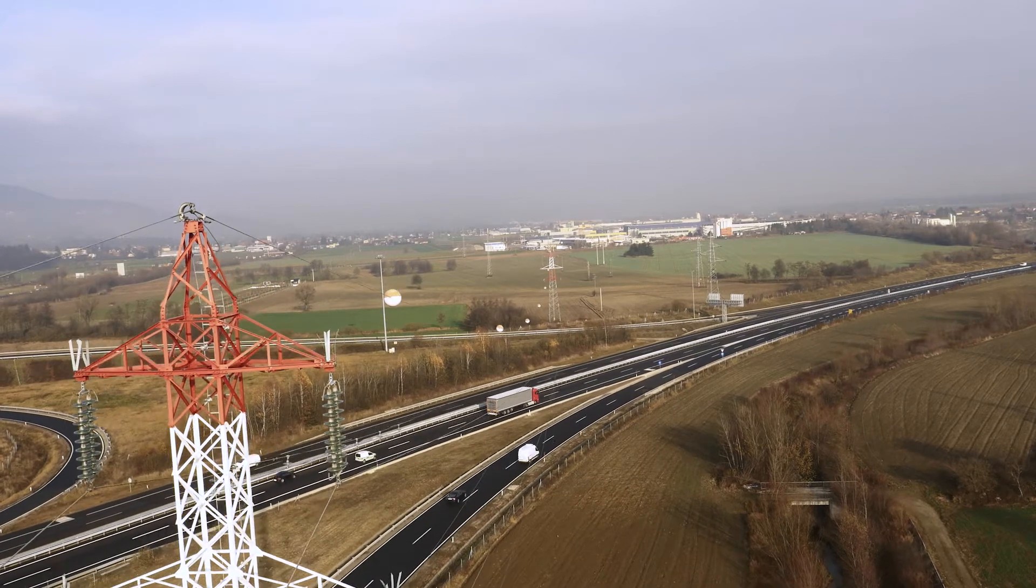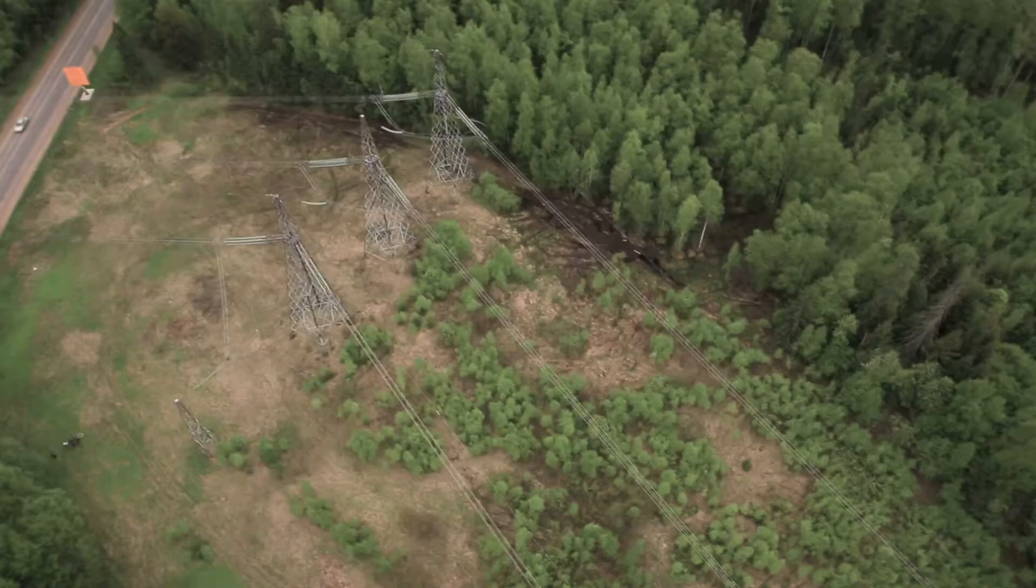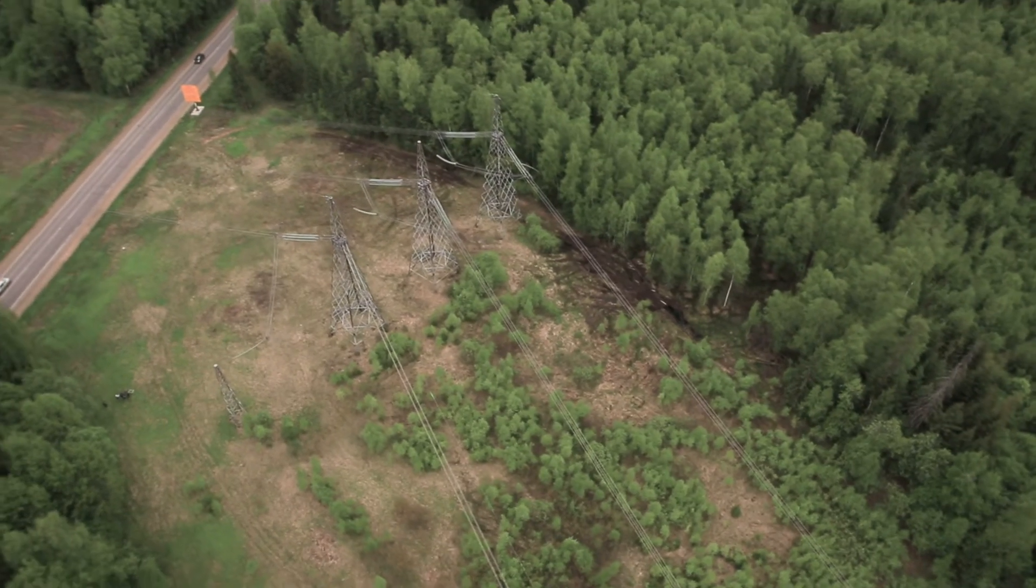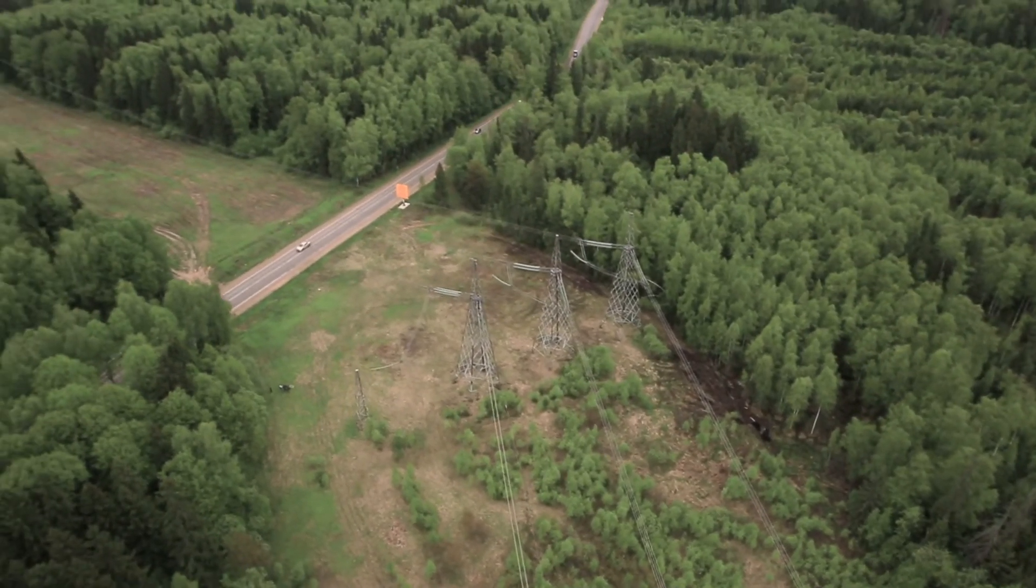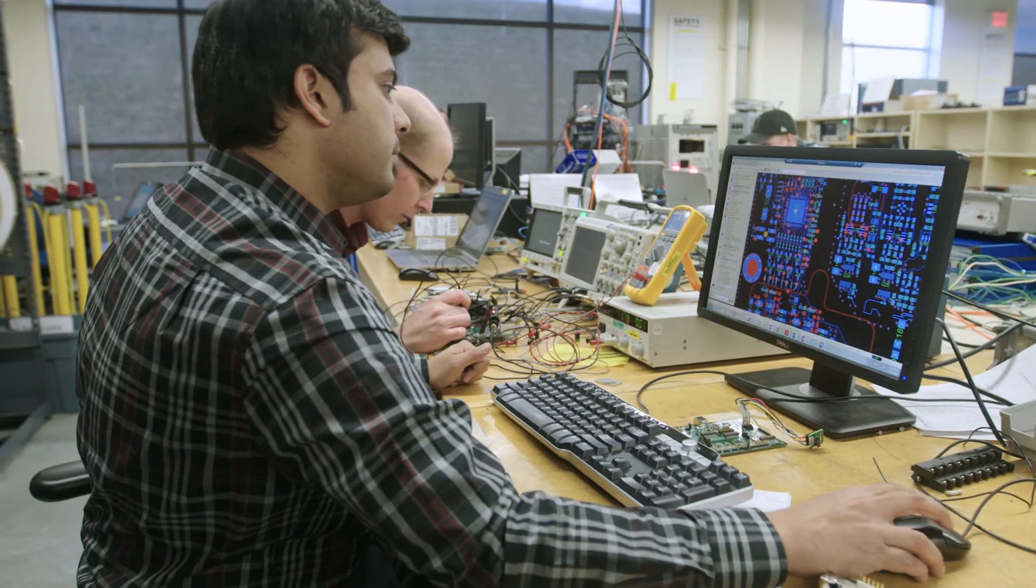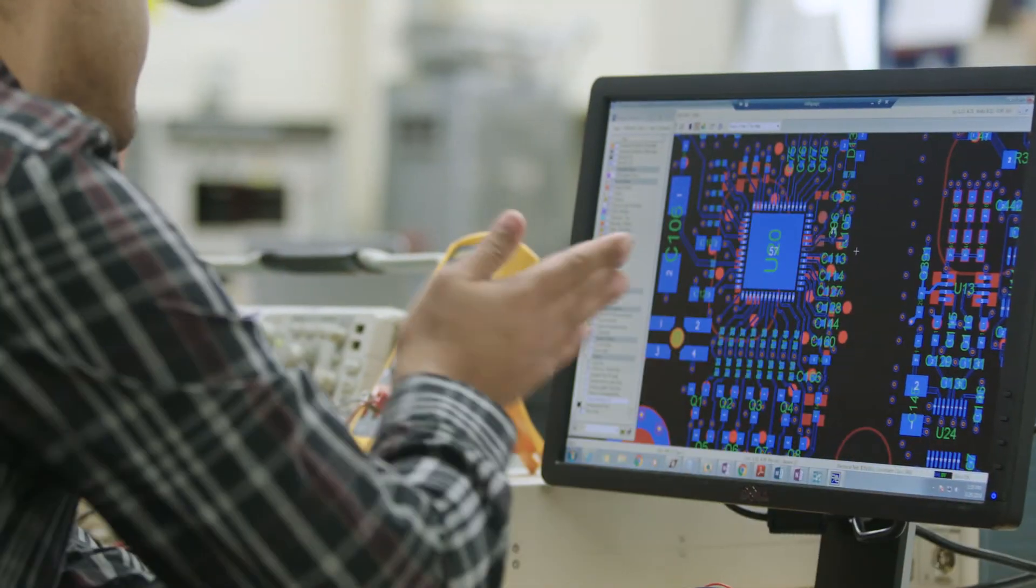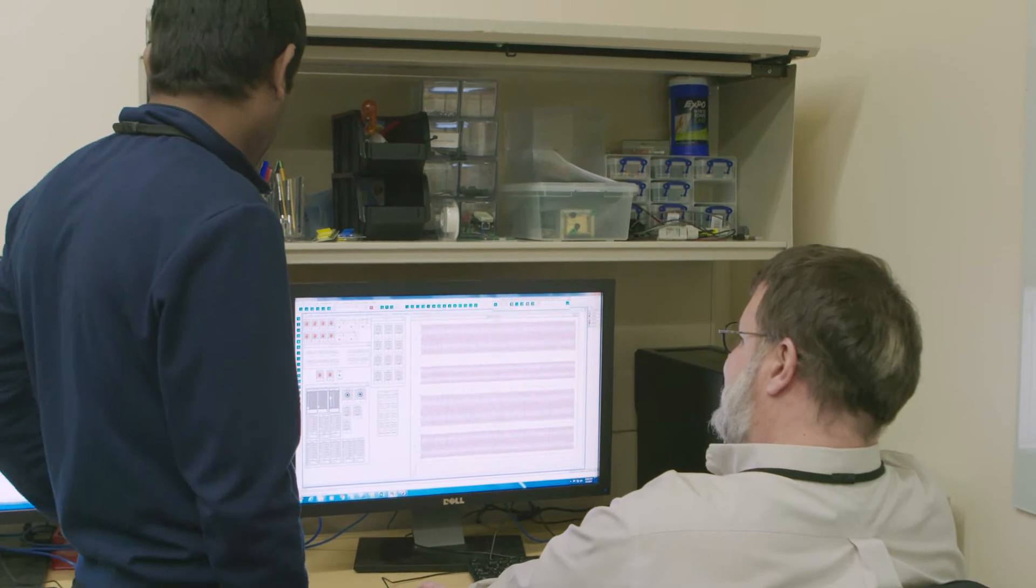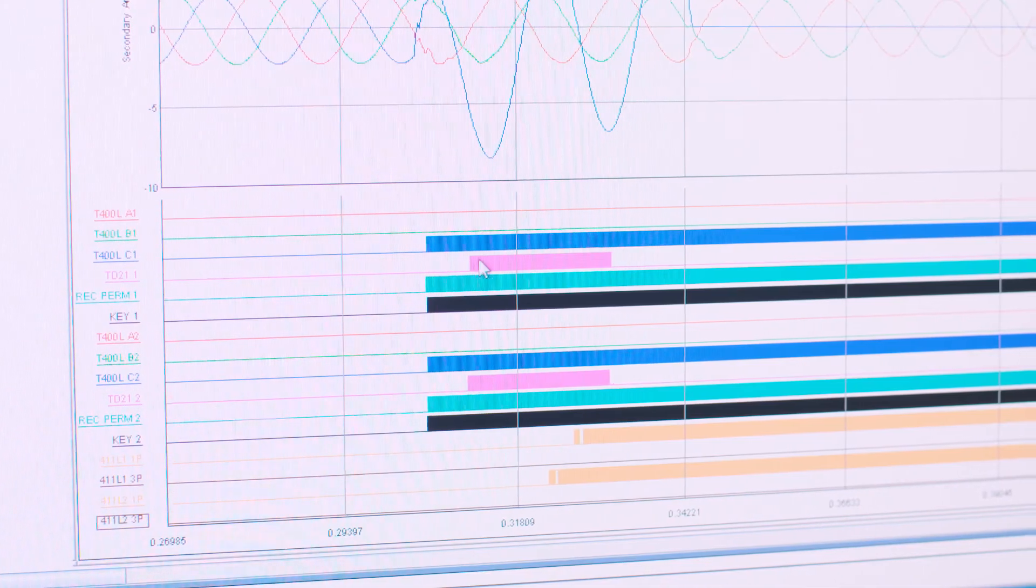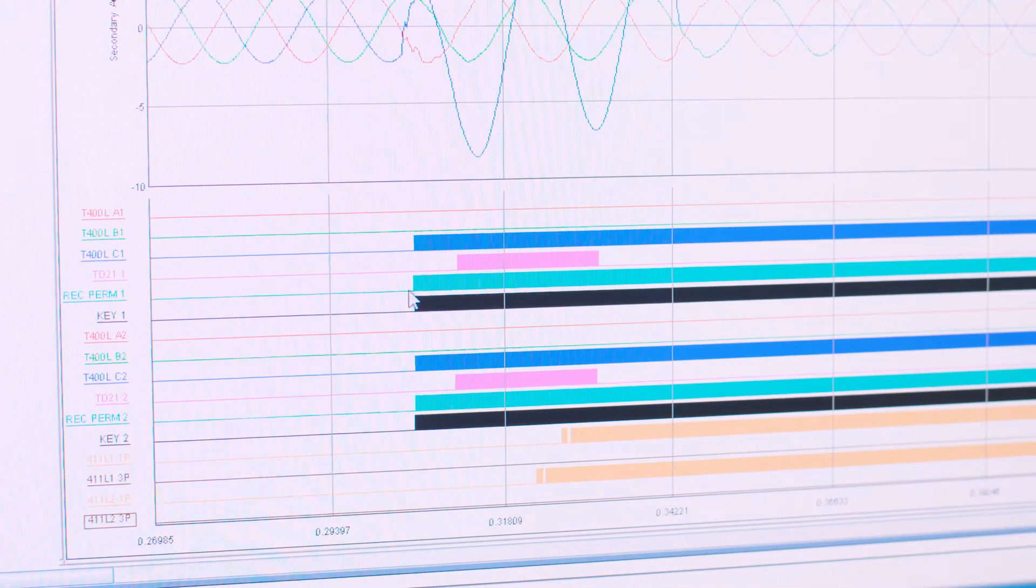Tripping fast is very important, but if you trip fast and you're wrong, there was no fault or the fault was out of section, that can be disastrous for the power system. So we've gone to great lengths with the T400L to make sure that it's not only the fastest relay on the market, but it's also secure, and it makes the right decision each and every time.